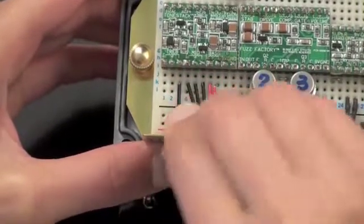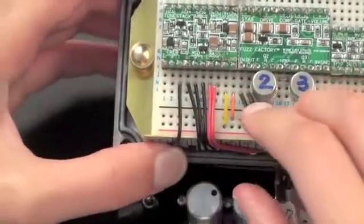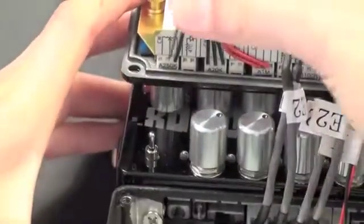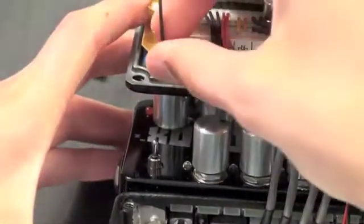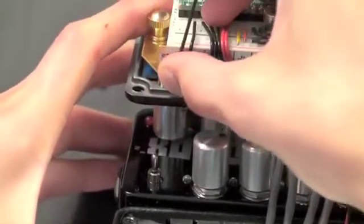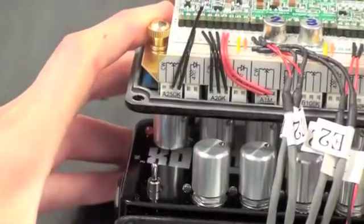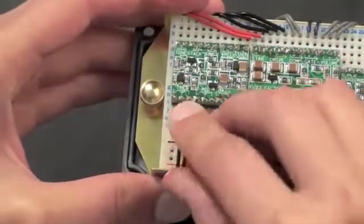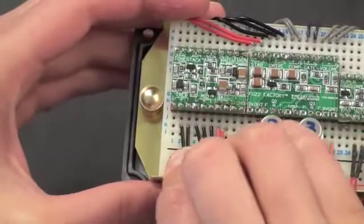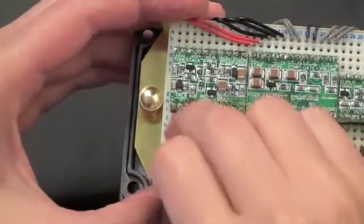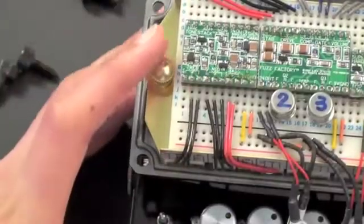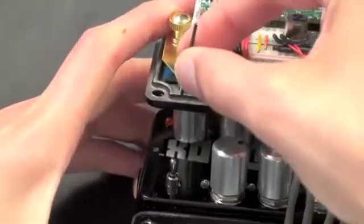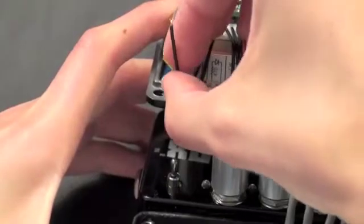Once again, we're using our thumb from our left hand to hold the wires in on the pot while we push the wires into place with our right hand. The middle connection on the A250K will go to K2 and the leftmost connection labeled CW on the A250K treble pot will connect to K1.